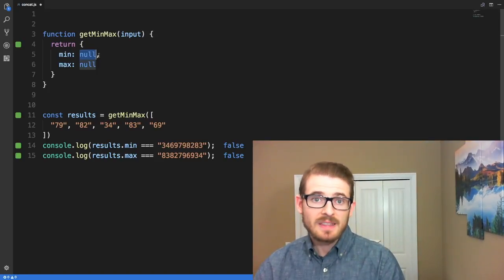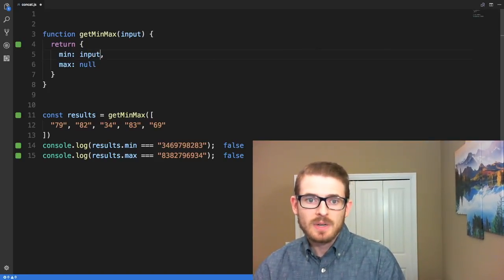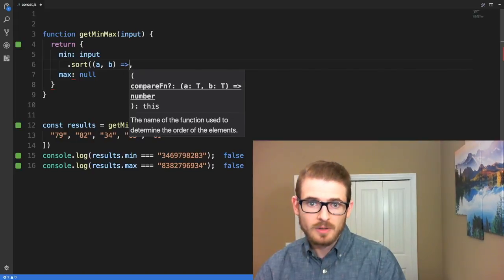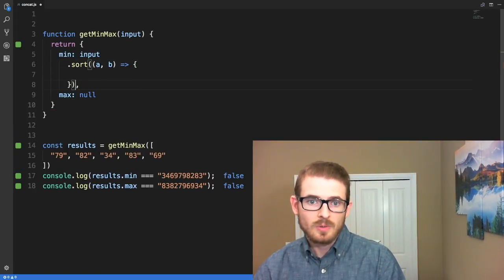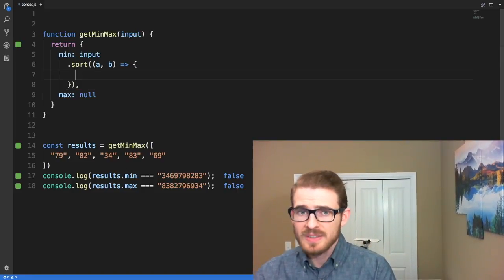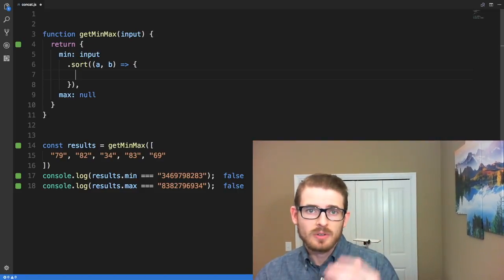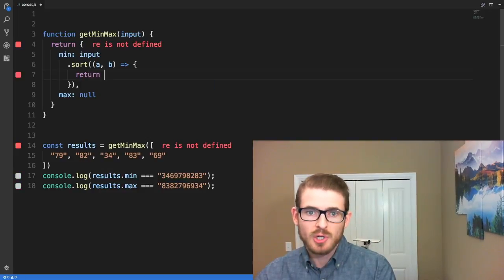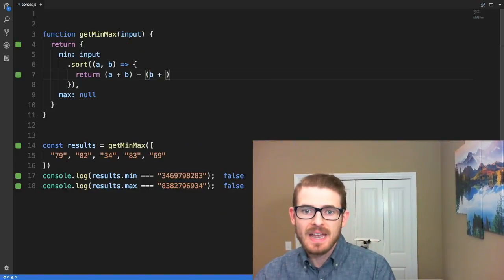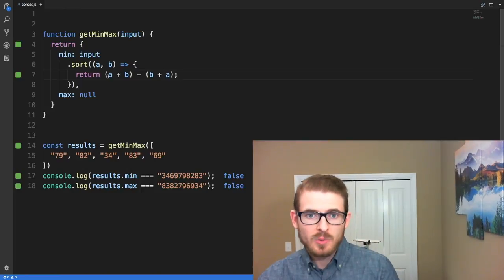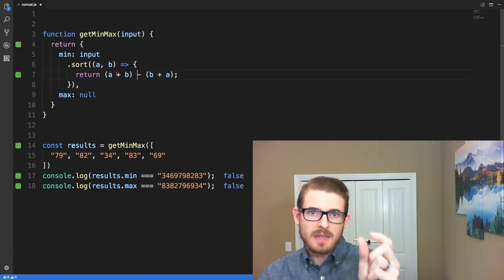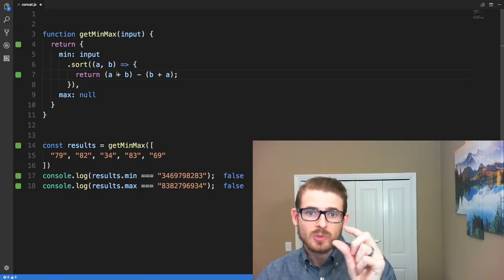And then we can work through one by one how to get this working. So the first thing, for getting the min, we first need to take the input of strings and then we need to sort them. And let's go ahead and pass in some anonymous callback function. So it takes a and b as a parameter. And then what we need to do here is really straightforward and really easy to do. Instead of having that long drawn-out if statement, we could just return a plus b, so a concatenated with b, minus b concatenated with a.